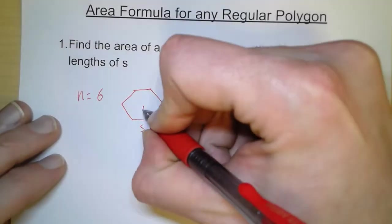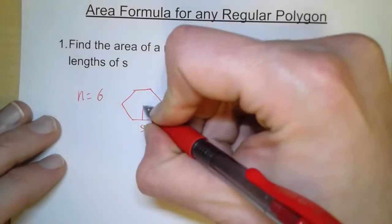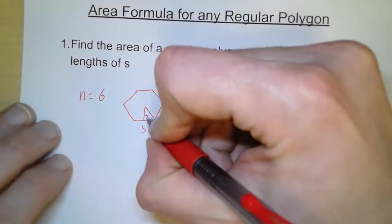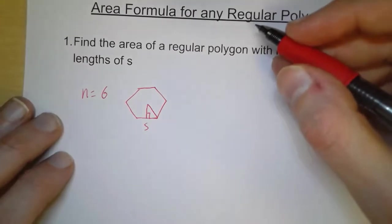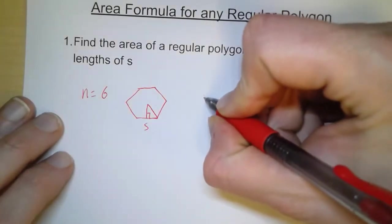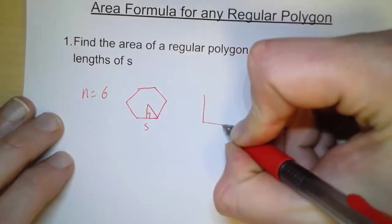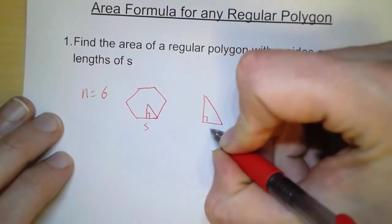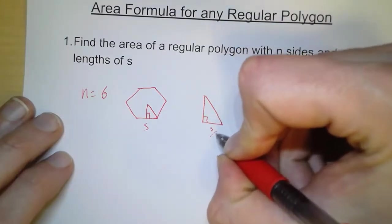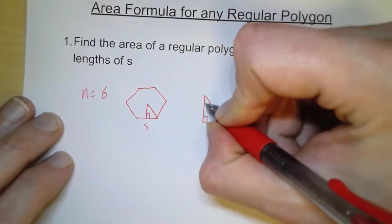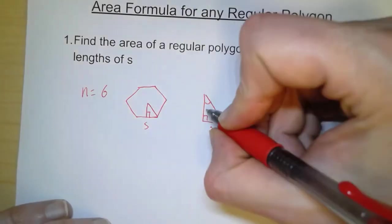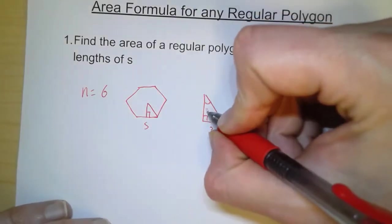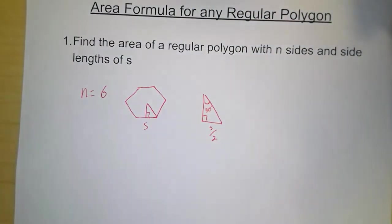What that means is we can break up this hexagon into 12 different right triangles. For each right triangle, the base is going to be s over 2. And in this case, since there are 12 triangles, this is going to have an angle of 30 degrees.